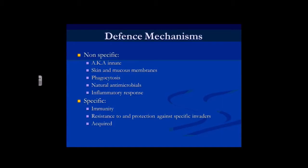Natural antimicrobials within our cells — things like probiotics, bacteria that live within our gut — help get rid of anything that shouldn't be there. And also inflammation, which in itself is helping defend us nonspecifically against anything that shouldn't be there. We're going to talk more about inflammation in the next session.